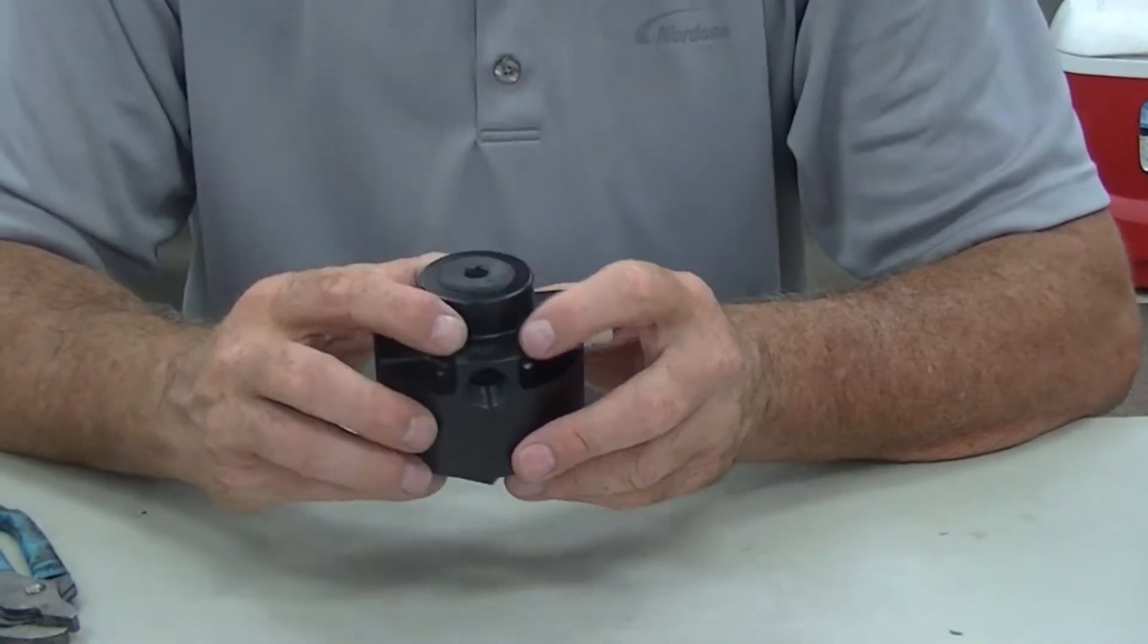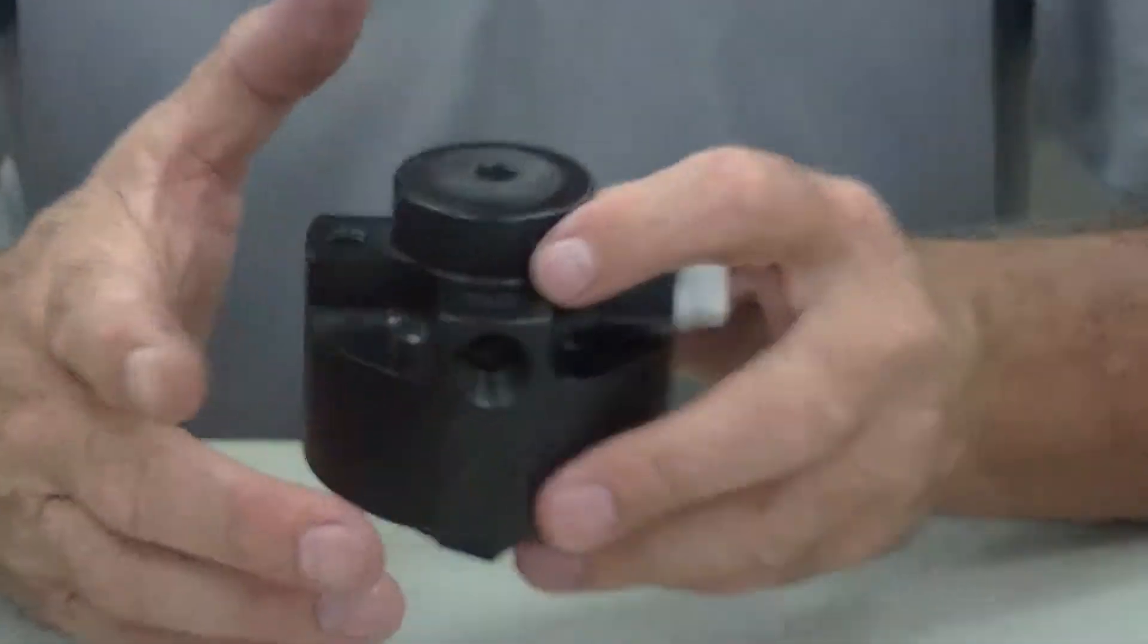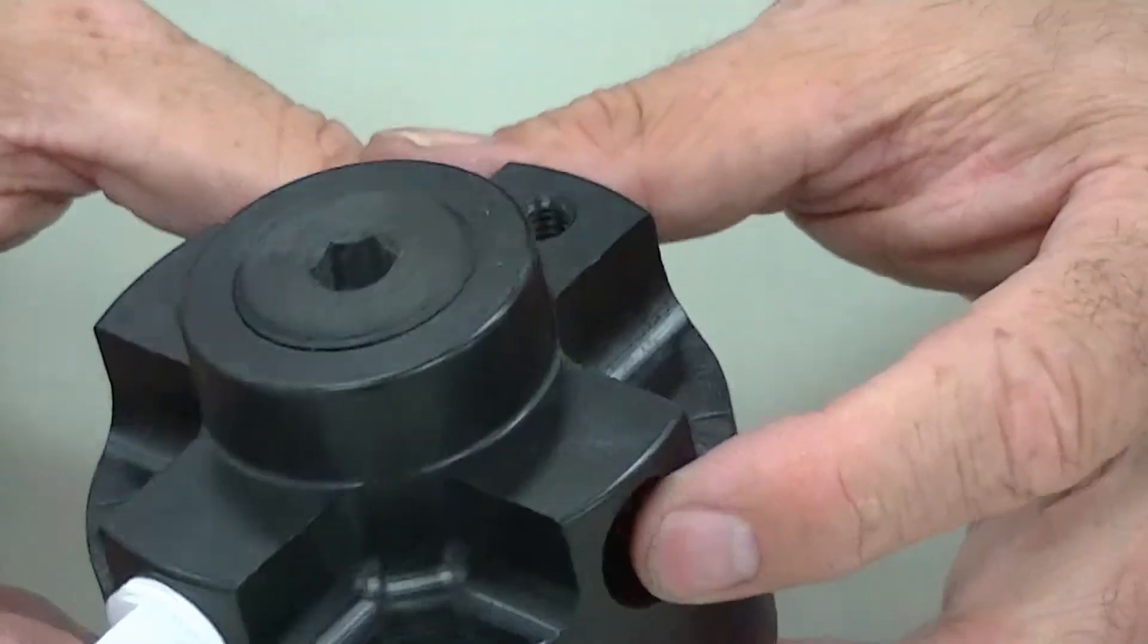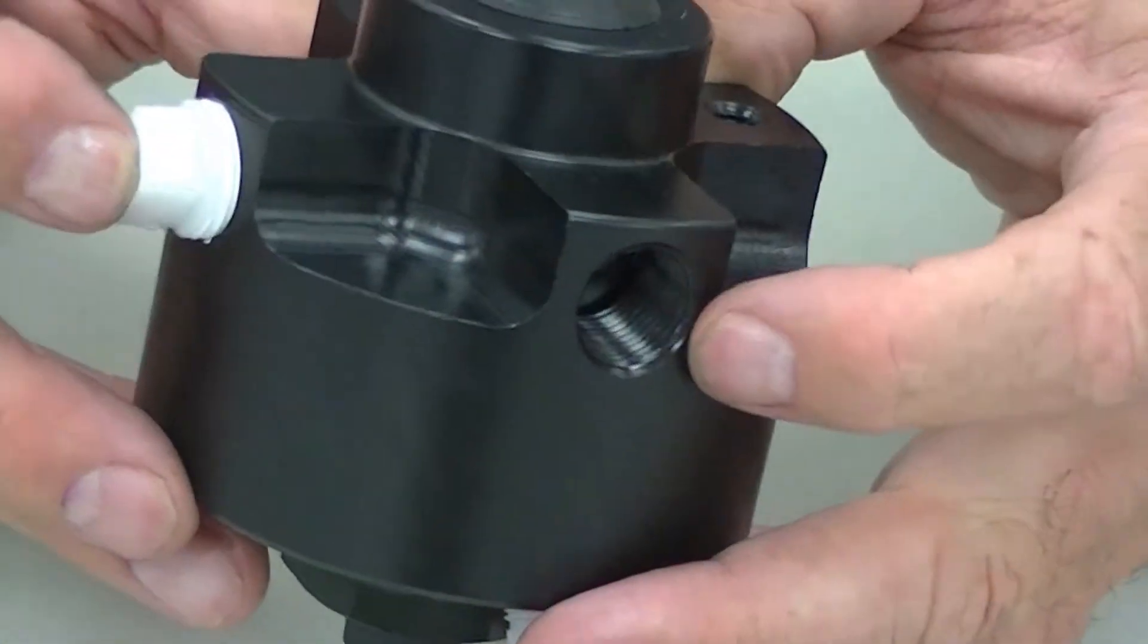We have marked on the bottom the outlet. That would be where the fluid comes out, goes into your spray device, and then we have an inlet. We have two inlet ports. One we have plugged on this.